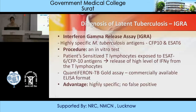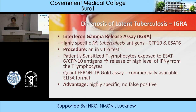Latent TB diagnosis using IGRA (Interferon Gamma Release Assay): highly specific M. tuberculosis antigens CFP10 and ESAT-6 are used. Procedure: in vitro test — patient-sensitized T lymphocytes are exposed to ESAT-6 or CFP10 antigen, releasing high levels of interferon-gamma from T lymphocytes, which is then detected. QuantiFERON-TB Gold assay is a commercially available ELISA format test. Advantages: highly specific, no false positive results.